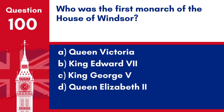Answer: c. King George V. In 1917, George V changed the royal family's name from the House of Saxe-Coburg and Gotha to the House of Windsor, in response to anti-German sentiment during World War I.